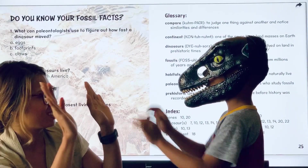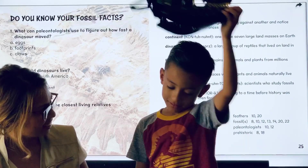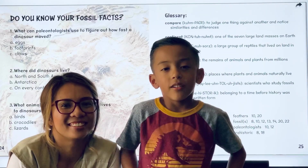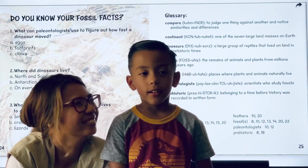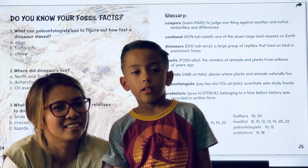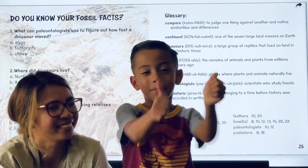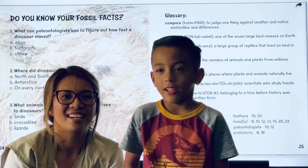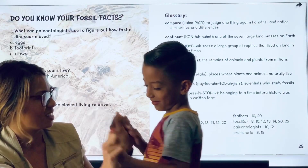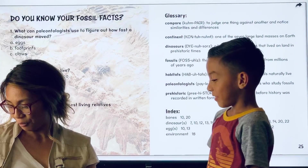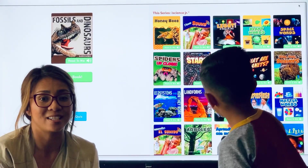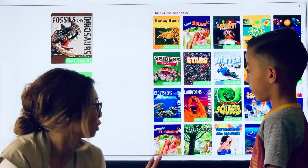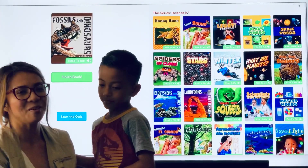Thank you, Leo — that was awesome. Do you have any last messages for the kids today? Leo says: Good job, kids. Keep on learning. The name of the book was Fossils and Dinosaurs, written by Julie K. Lendron. It is an AR book, so go ahead and re-watch the video, re-read it again, and go ahead and take a test. Thank you everyone, bye.